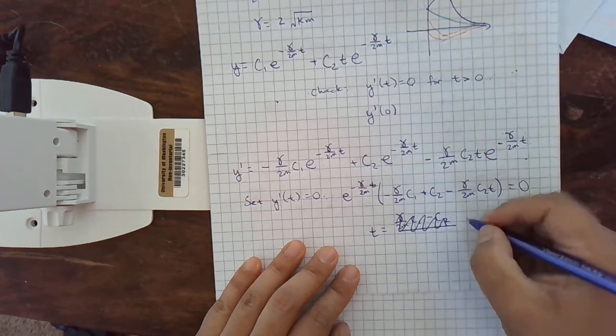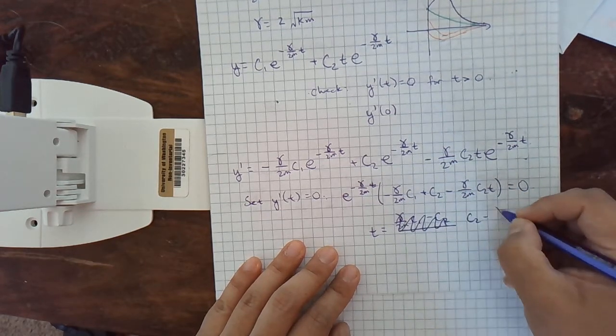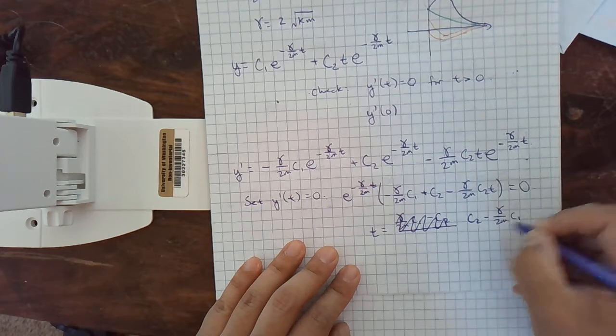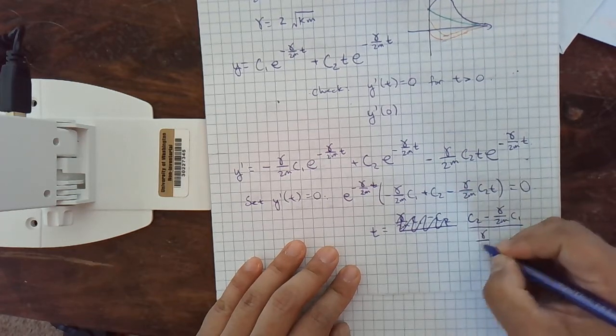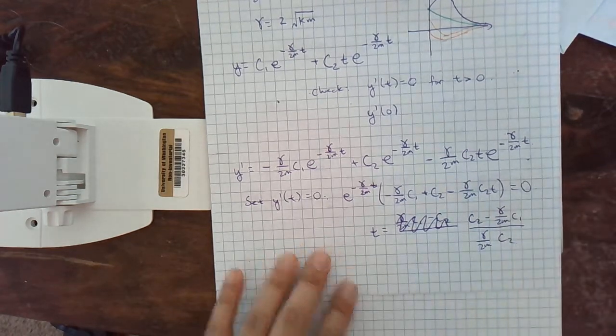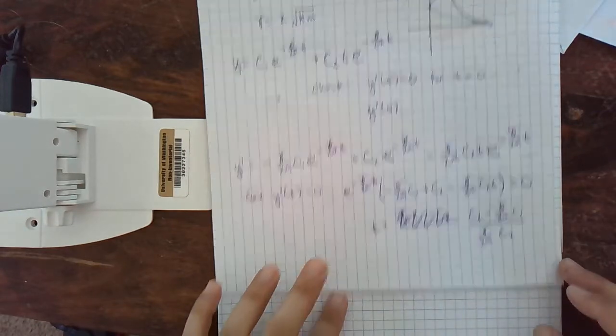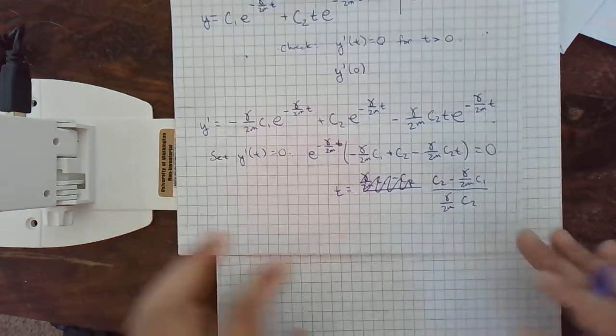Let's do it the other way. Let's do c2 minus gamma over 2m c1 over gamma over 2m c2. That's just solving a linear equation with very ugly coefficients.